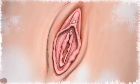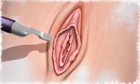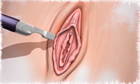At the beginning of the procedure, the treatment tip is placed inside the vaginal opening immediately behind the hymenal ring, avoiding the urethra.